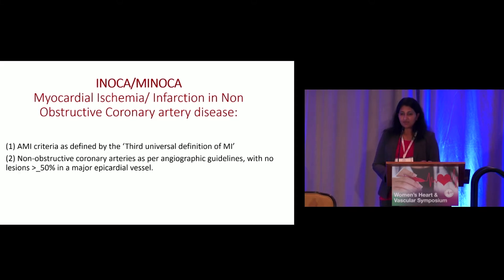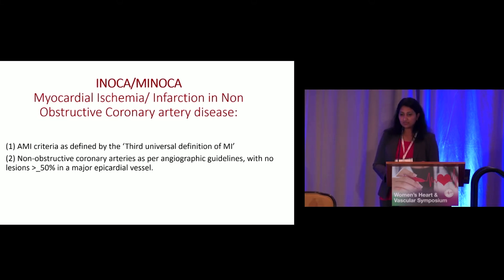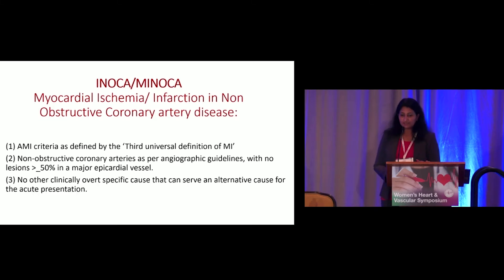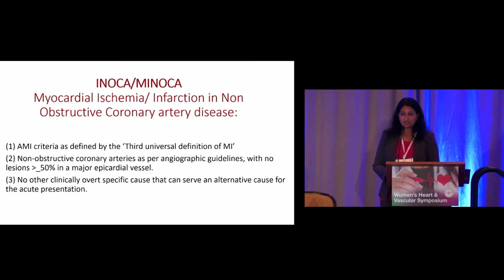The second criterion for MINOCA is that on coronary angiogram or coronary CTA, blockages should be less than 50%. So anywhere between zero and 49% obstruction meets this criterion. Third, there should be no other clinically overt specific cause as an alternative explanation for the acute presentation — we rule out acute pulmonary embolism, aortic dissection, and other conditions that can cause minor troponin rises and chest pain. If a patient meets all three criteria, we give them the diagnosis of MINOCA or INOCA.